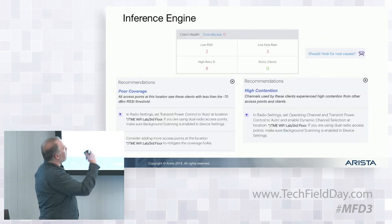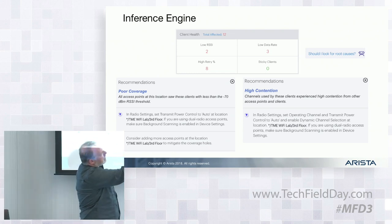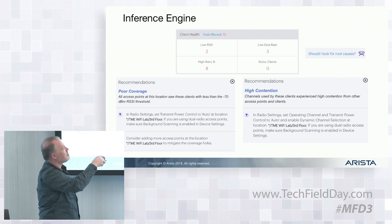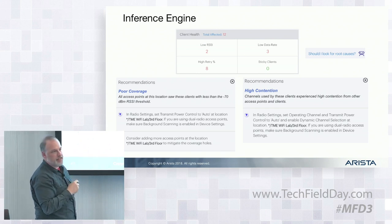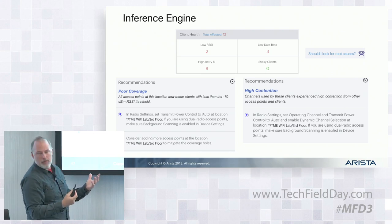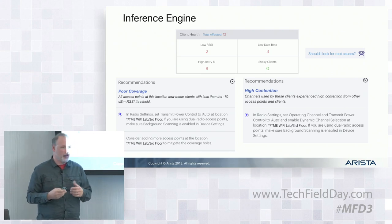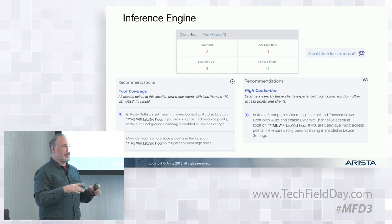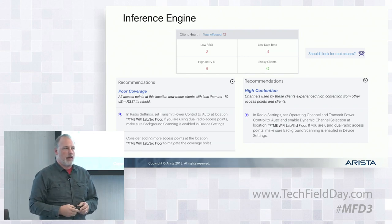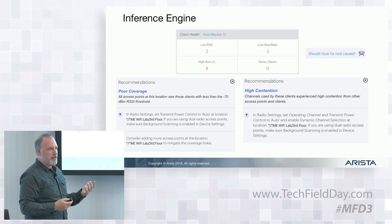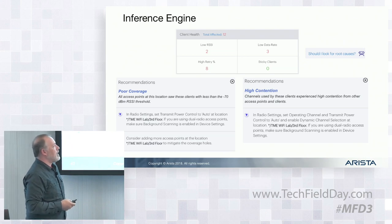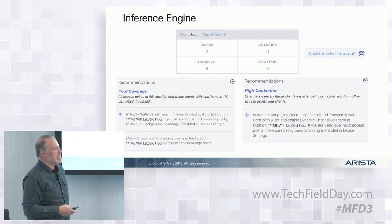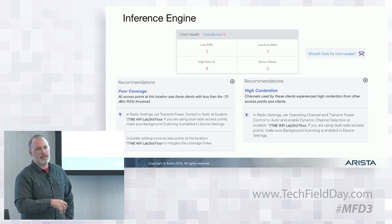The result of the root cause and inference engine is these automated recommendations — basically crunching the data and saying this is the problem. We had a real example in one of our offices where they were having performance issues. As a Wi-Fi vendor you have a lot of APs around, which can sometimes cause problems. There was just way too many test APs in that area — they were all contending for a particular channel. And this actually popped up really nicely and said: there are too many APs on that channel.